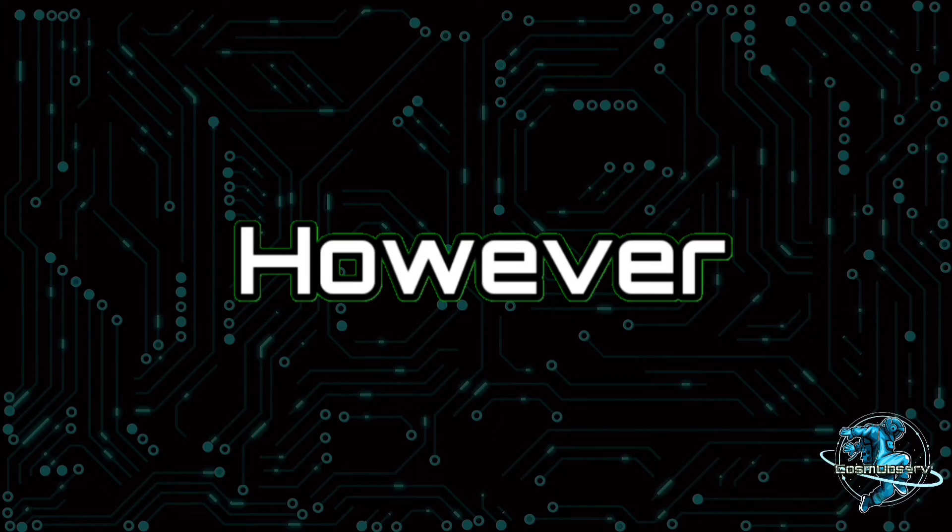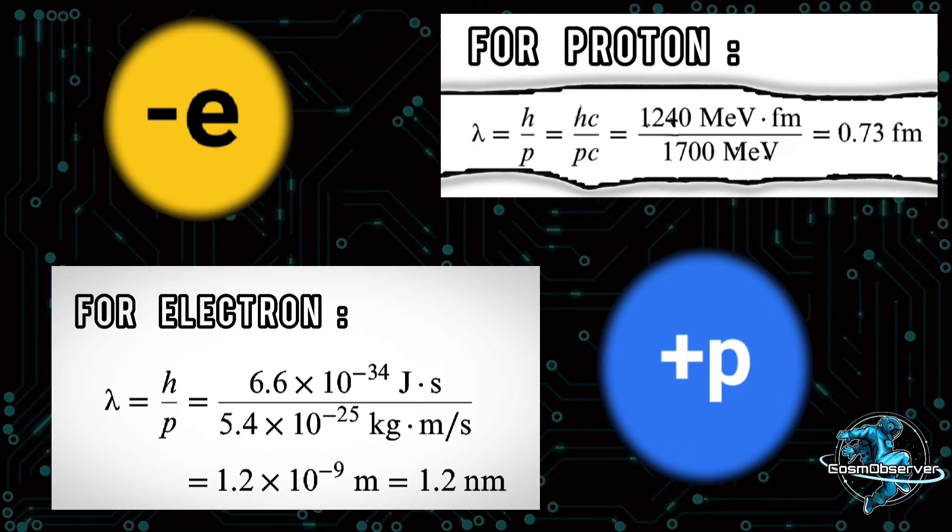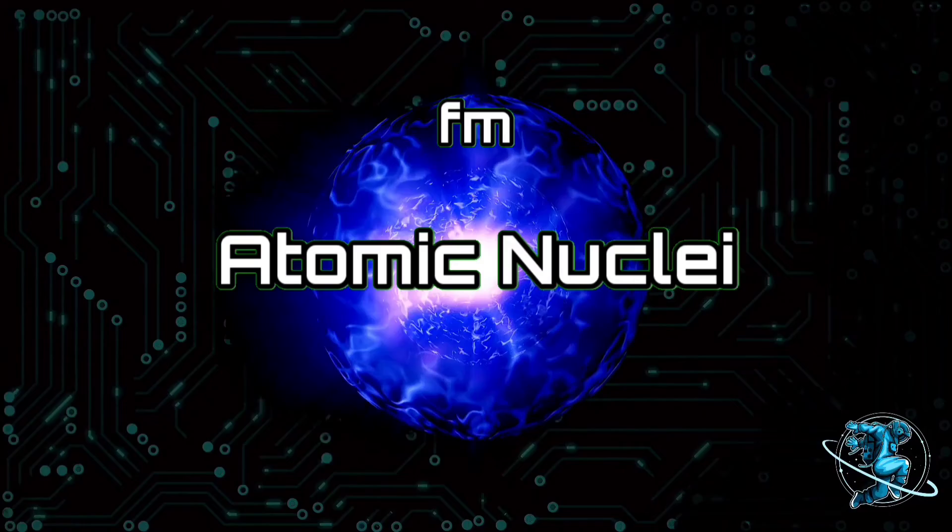However, if you notice for particles like electrons and protons, the de Broglie wavelength is in the order of nanometers or picometers, which is detectable, as the size of atomic nuclei is in the order of femtometers. That means we can perform the double-slit experiment on these particles to prove de Broglie correct.